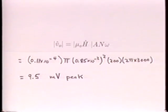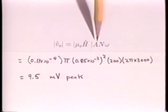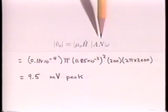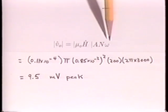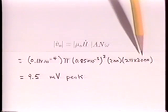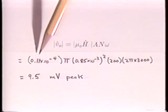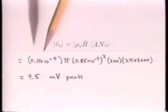Our coil has an effective area of pi 0.85 centimeters squared, 200 turns, and an angular frequency of 2 pi times our frequency, which is 3 kilohertz. In this demonstration, a typical measured flux density of 0.11 Gauss peak gives an induced voltage of 9.5 millivolts peak.